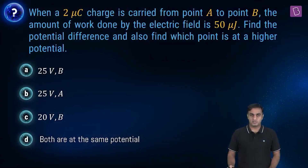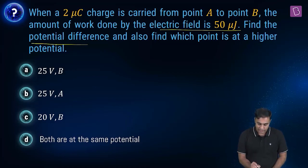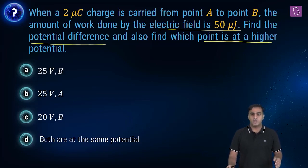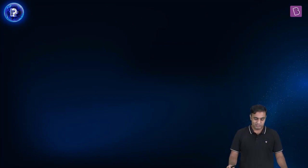Let me help you with the data of the question. We are considering here a 2 microcoulomb charge which is carried from point A to point B, and the amount of work done by the electric field in this case happens to be 50 microjoule. We need to find the potential difference between point A and point B, and also the point which is at higher electric potential. Remember, electric field happens to be along the direction in which the electric potential decreases at the highest rate.